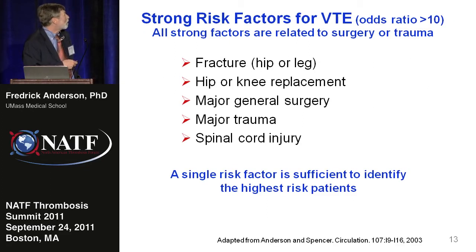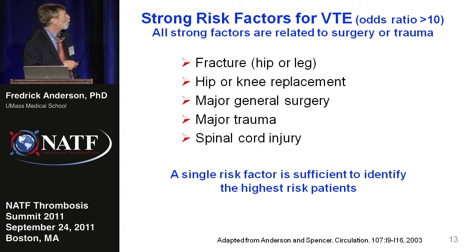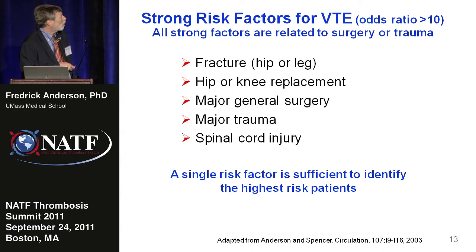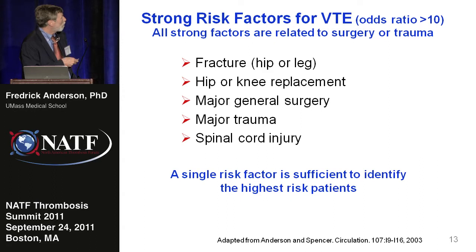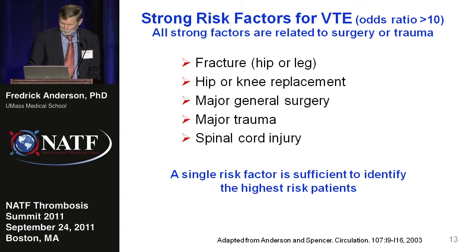So who are these people? I like trying to stratify risk factors. My effort began by looking at publications and looking for risk factors that by themselves had an odds ratio of greater than 10. Hip and knee leg fracture, hip and knee replacement, major general surgery, major trauma, and spinal cord injury are all related to surgery or trauma, and you don't need a calculator to figure out that these patients need prophylaxis. A single risk factor is sufficient to identify high-risk patients in this case. We shouldn't let people get confused — you only need one risk factor to know these patients are very high risk.